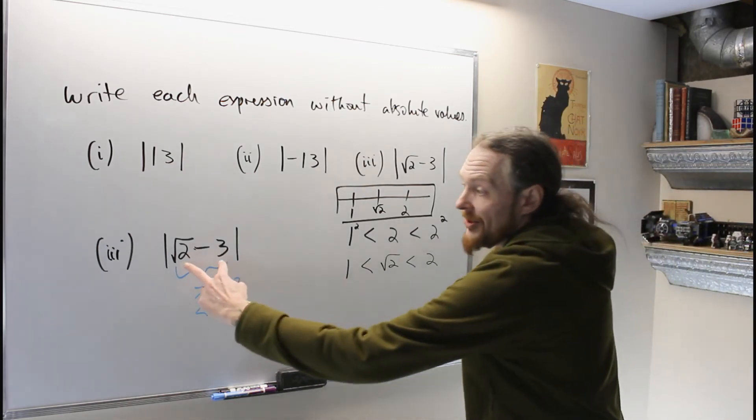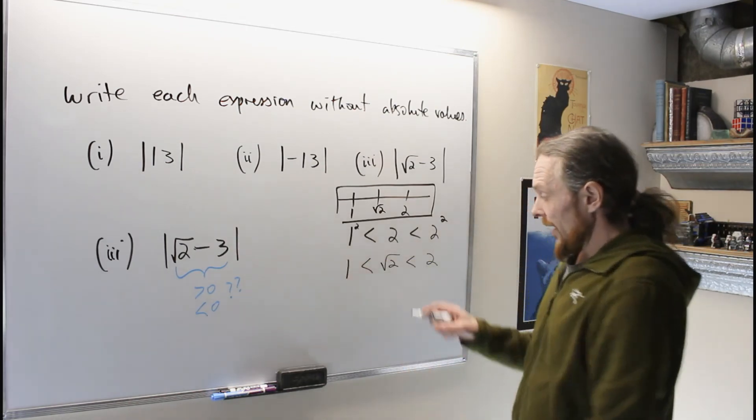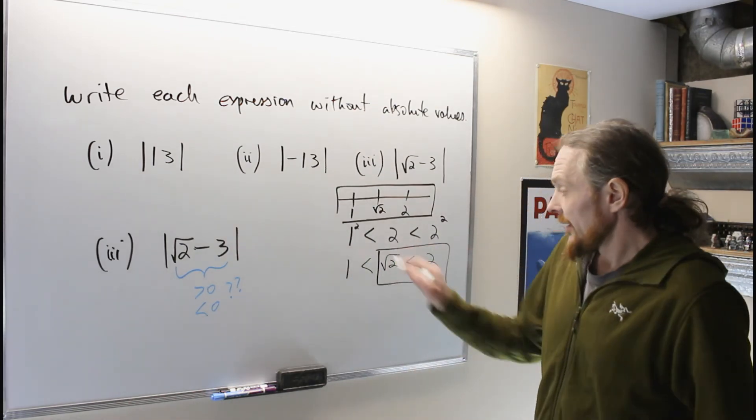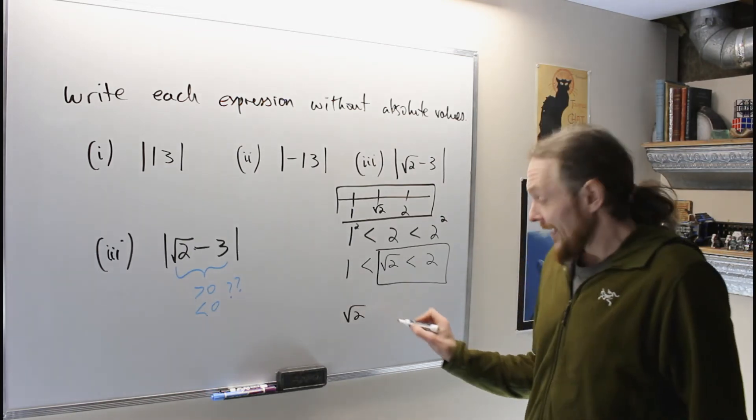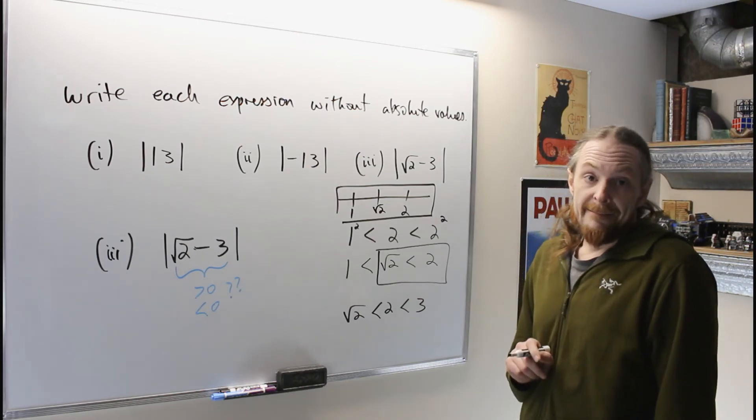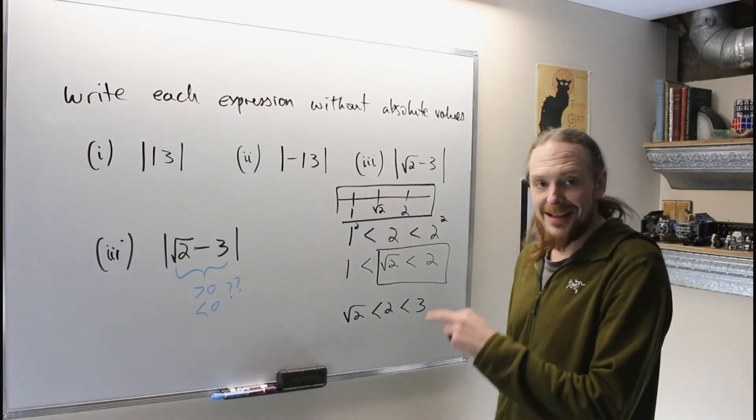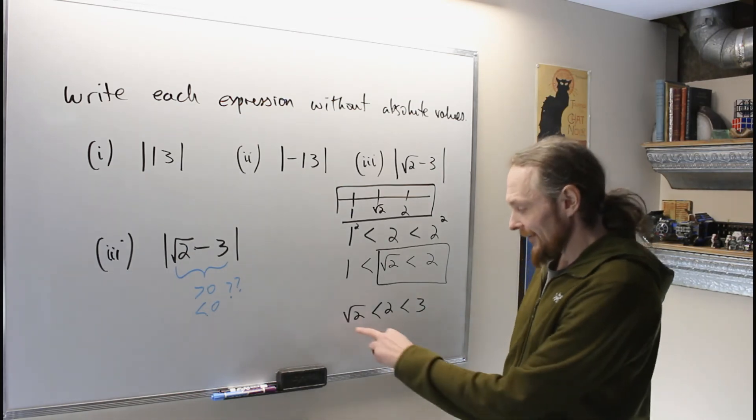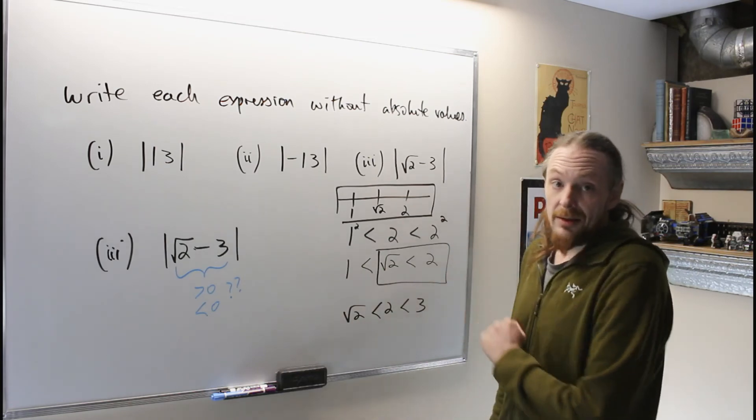What was I trying to do? I was trying to compare root two and adding negative three to this thing. So what I really want is this inequality: I can see that root two is less than two and two is definitely less than three. So then I'm going to use transitivity of inequality - if this is less than this and two is less than three, then the square root of two is less than three.